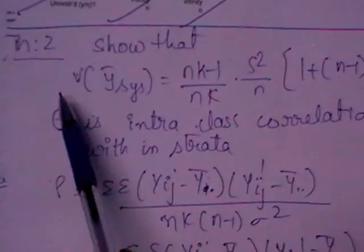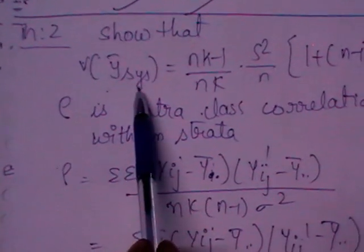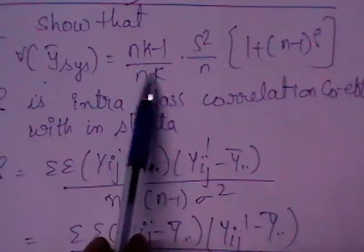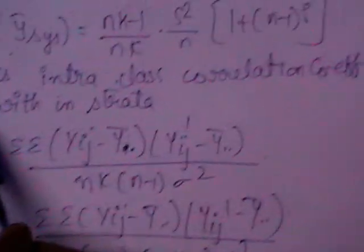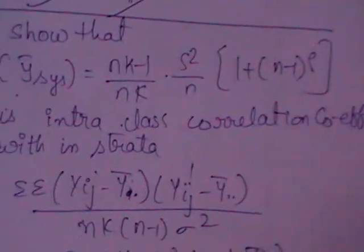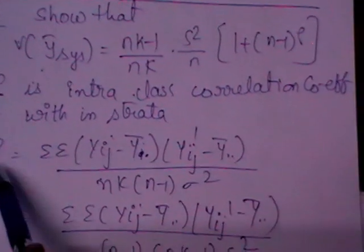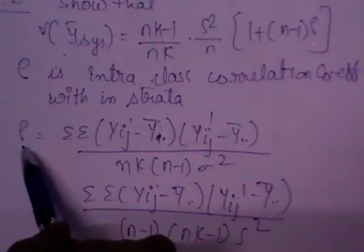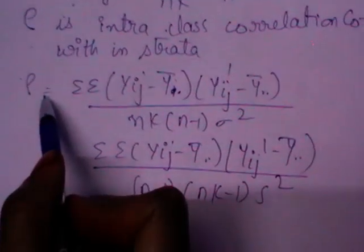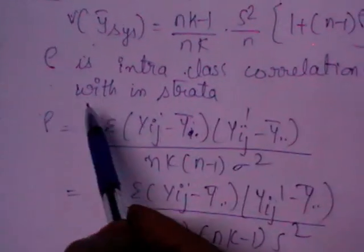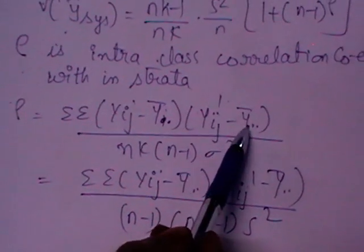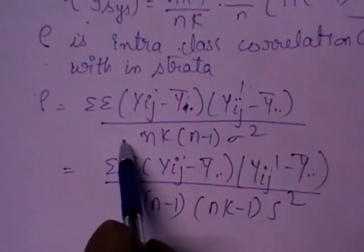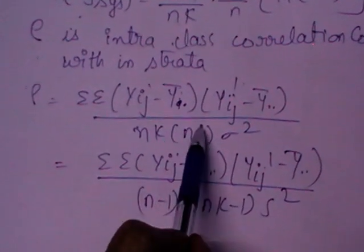In a systematic sample, the variance of ȳ_sys is equal to (nk - 1) / (nk) · s² / n · [1 + (n - 1) · ρ], where ρ is the intra-class correlation coefficient within the strata. The formula for ρ is: double summation of (y_ij - ȳ..) · (y_ij' - ȳ..) divided by (n - 1)(nk - 1) · s².